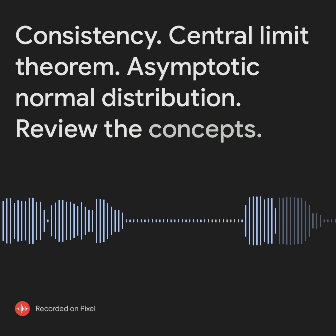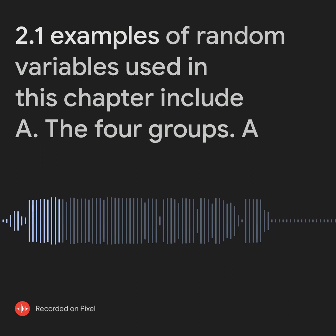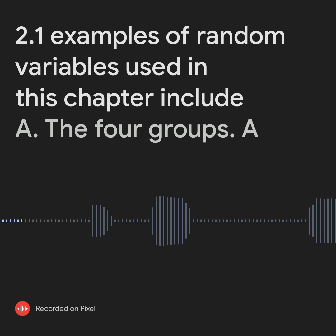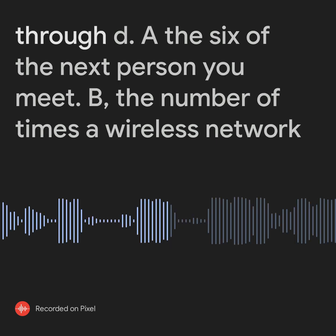Review the Concepts. 2.1 Examples of random variables used in this chapter include the four groups, A through D.